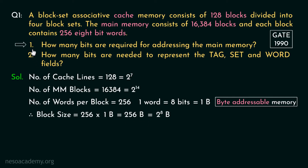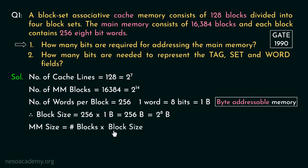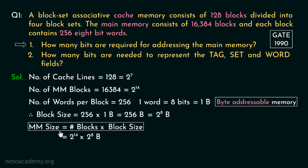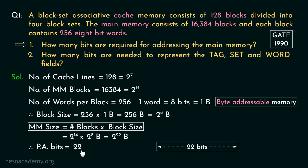Coming to question number 1, they are asking how many bits are required for addressing the main memory — basically asking about the physical address bits. To find the physical address bits, we first find the size of the main memory by multiplying the number of blocks by the block size. The main memory has 2 to the power 14 blocks, and each block is 2 to the power 8 bytes. Therefore the main memory size is 2 to the power 22 bytes, so 22 bits are required for addressing the main memory.